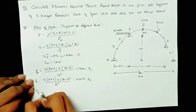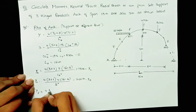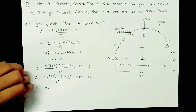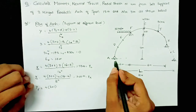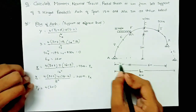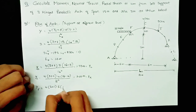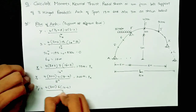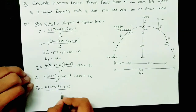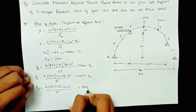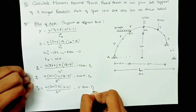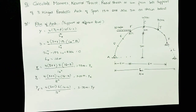Calculating rise at F: yf = 4(3 + 1) · 6 · (16 − 6) / 16² = 3.75 meters. Here x = 6 meters (distance from A to F). The same rise applies to point J: y_J = 3.75 meters. We have now calculated the rises at all required points on the arch.